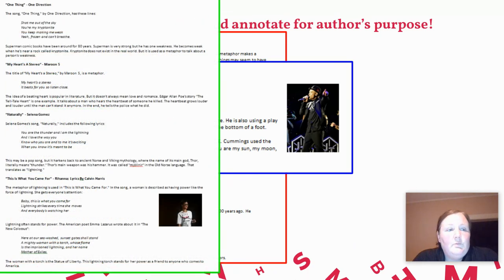One Thing, One Direction. The song One Thing by One Direction has three lines: Shot me out of the sky, you are my kryptonite. You keep making me weak. Yeah, frozen and can't breathe.